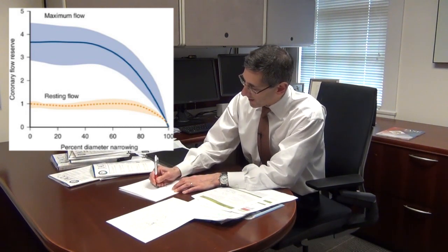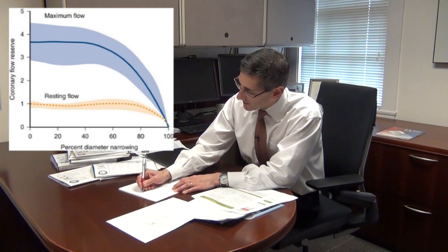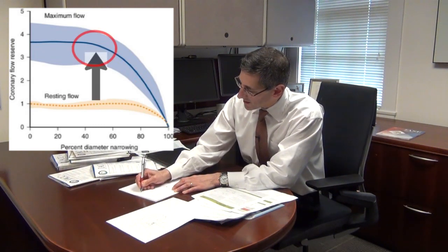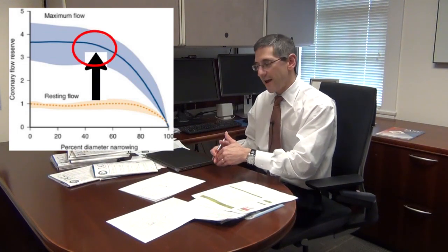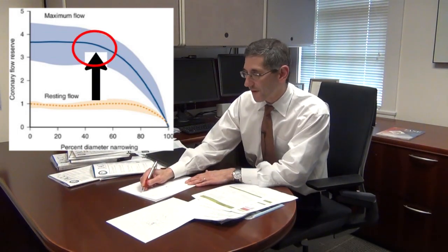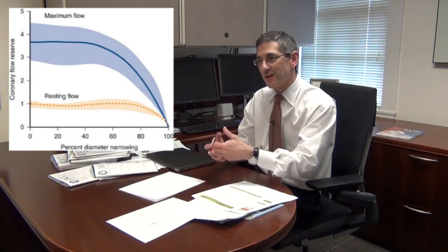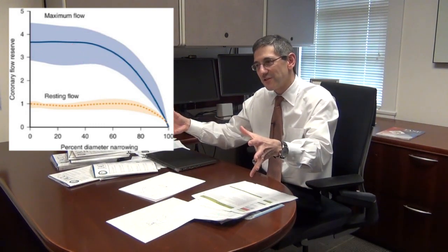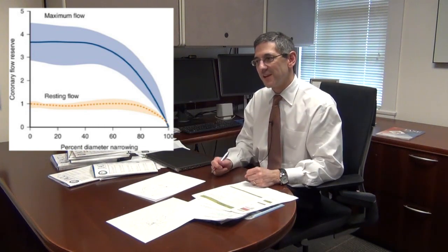Plotting blood flow against percent stenosis, we can detect abnormalities in blood flow at a much earlier stage by finding less augmentation of blood flow — caused by the combination of having used up the dilation reserve of those small downstream vessels and the resistance from the upstream blockage.